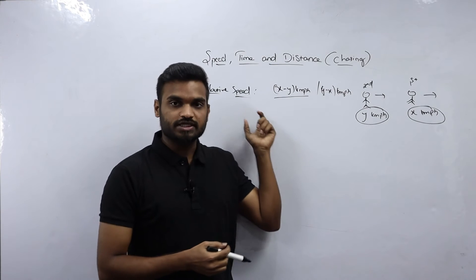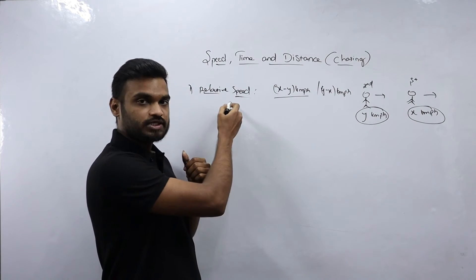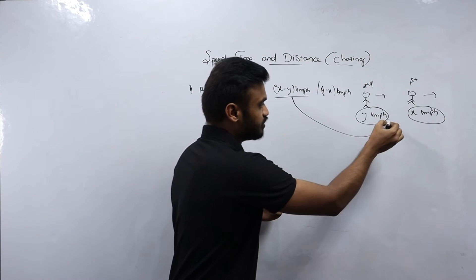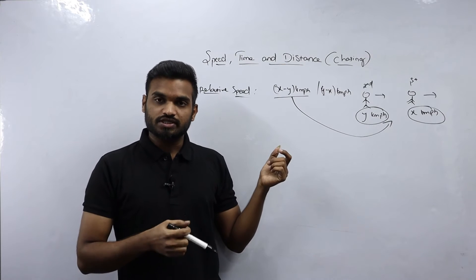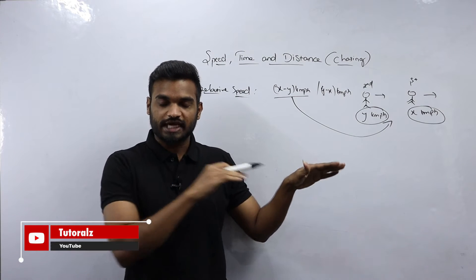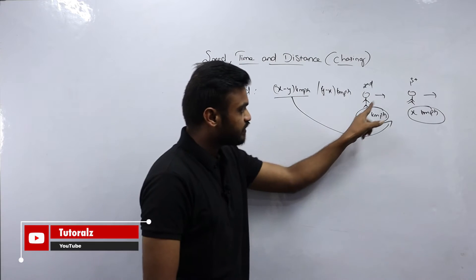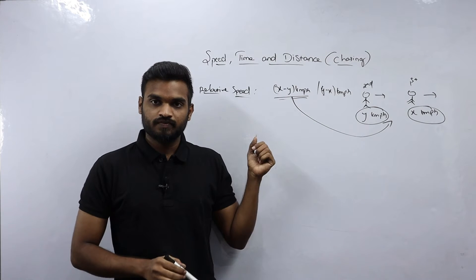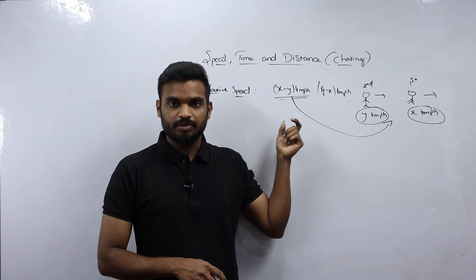This difference, X minus Y km per hour, is called relative speed. Relative speed is the relation between the two speeds of the persons. When both persons are traveling in the same direction, the relative speed is X minus Y km per hour. This is the most important thing to remember when it comes to the chasing topic in speed, time and distance.